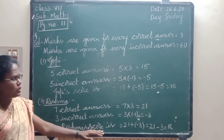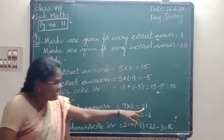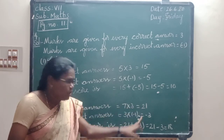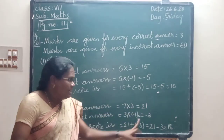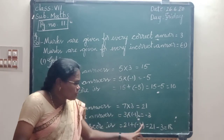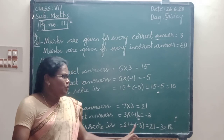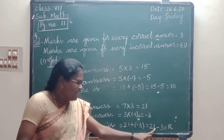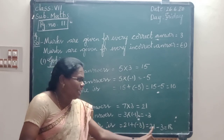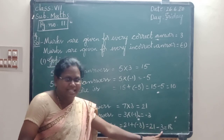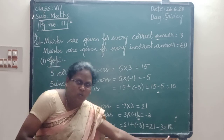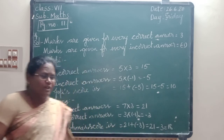Therefore, Reshma's score. Correct answers score is 21. Incorrect answers score is minus 3. Plus into minus is minus. 21 minus 3 equals 18.